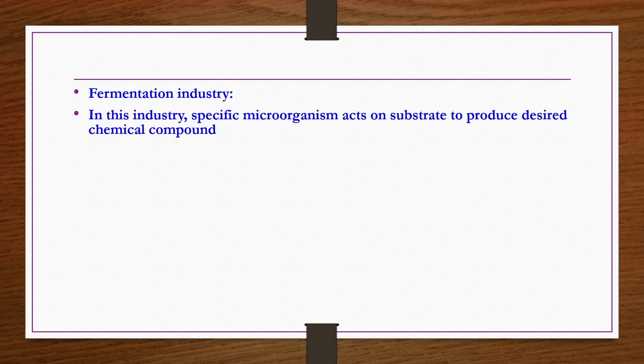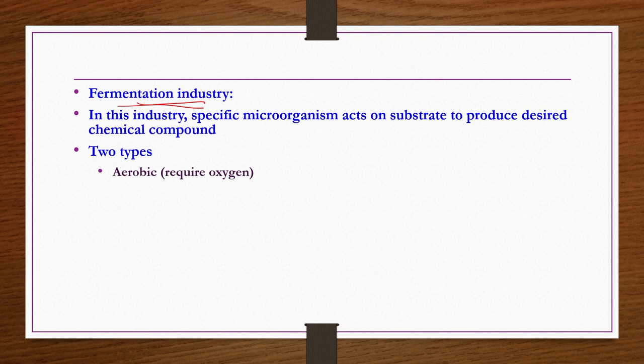In fermentation industry, specific microorganisms act on a substrate to produce a desired chemical compound. Selection of the microorganism is essential since a given microorganism may be good for producing one product but not another. There are two types: aerobic fermentation, which occurs in the presence of air or oxygen, and anaerobic fermentation, which occurs in the absence of air or oxygen.